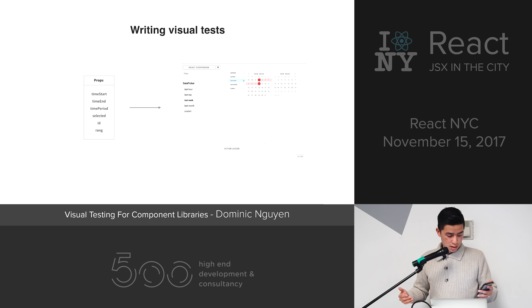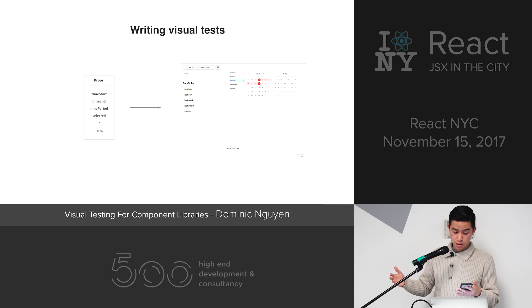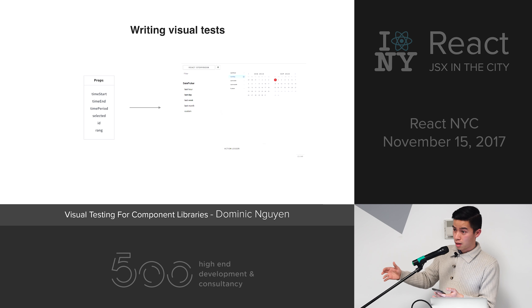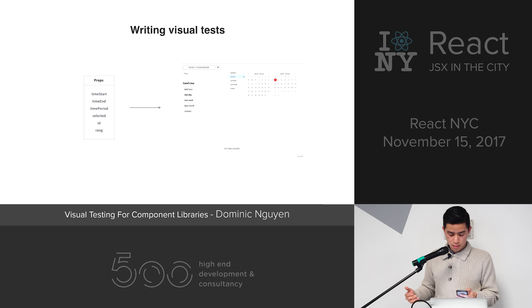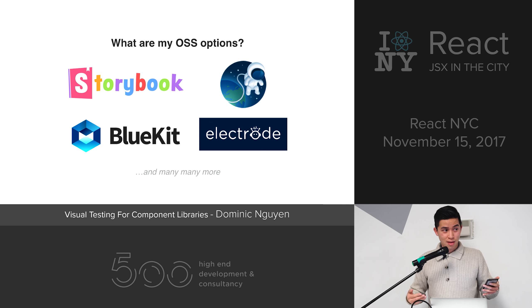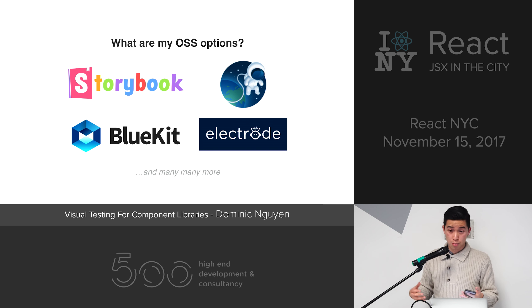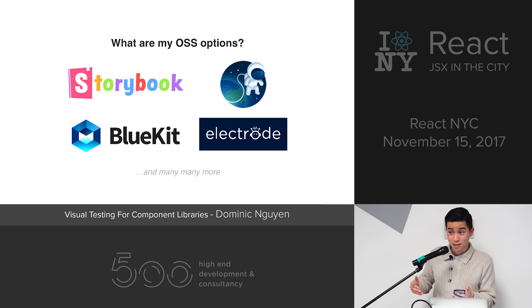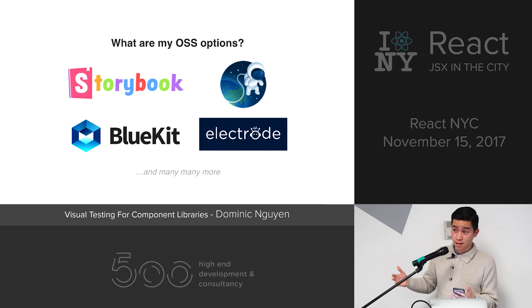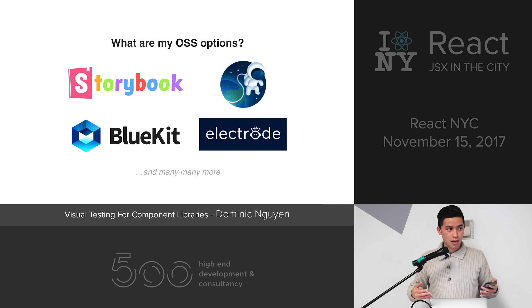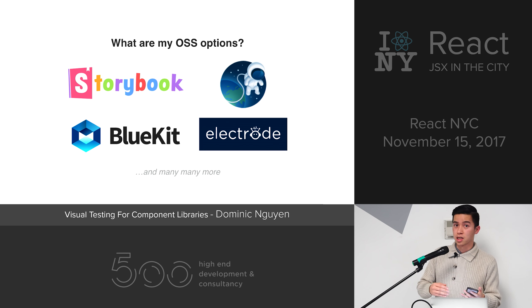Component explorers live alongside your app in development mode. You can think of them as a development environment to build and test UI components. Writing visual tests is as simple as getting your component to render in a certain state in the component explorer. You pass props just like you would if you were building it in your app, and then you see it in isolation on screen — which allows you to confirm that it looks okay. There are plenty of open source options, the most popular being Storybook, which my team helps sponsor and maintain.